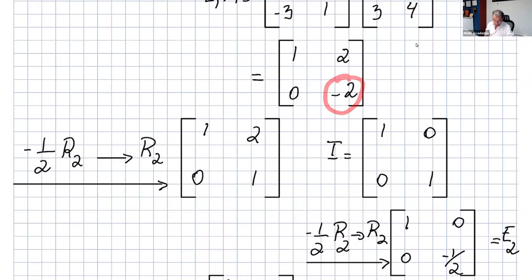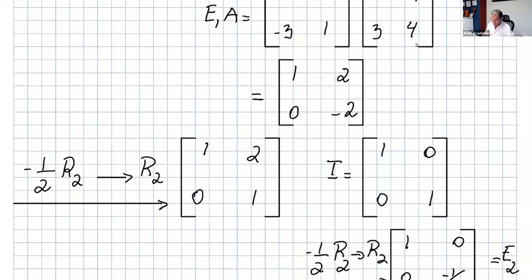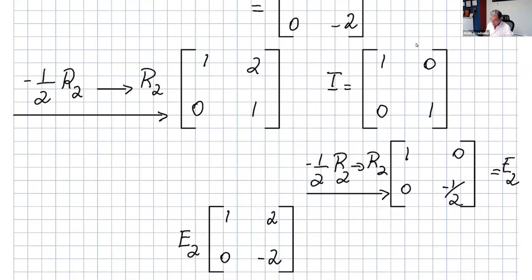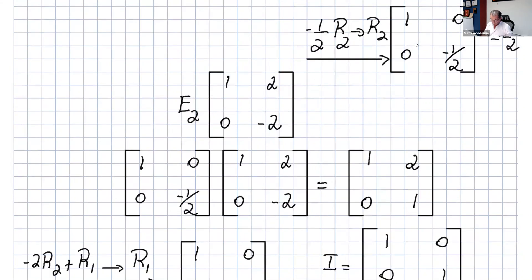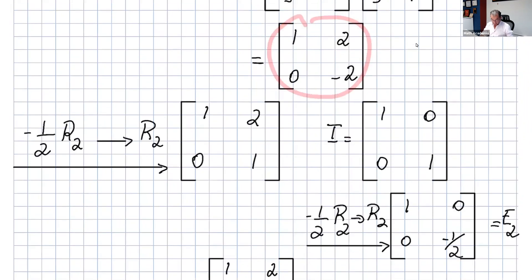Apply -1/2 · R2 to the current matrix to get [[1,2],[0,1]]. Always start with I when building the elementary matrix — apply -1/2 · R2 to I to get E2 = [[1,0],[0,-1/2]]. Multiplying E2 by the previous matrix gives [[1,2],[0,1]], which matches the result of applying the row operation directly.